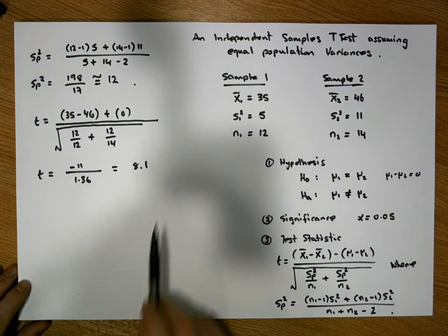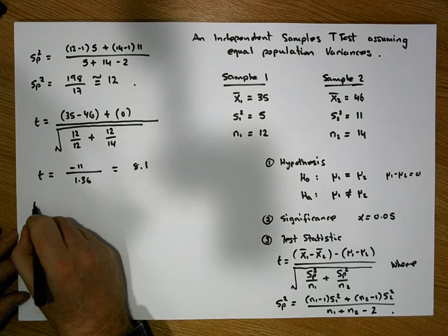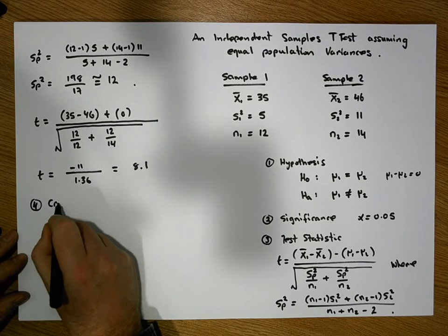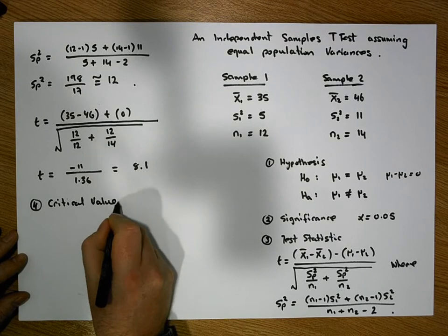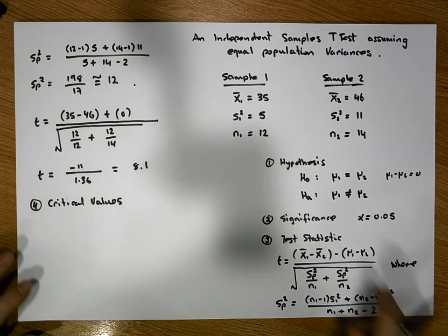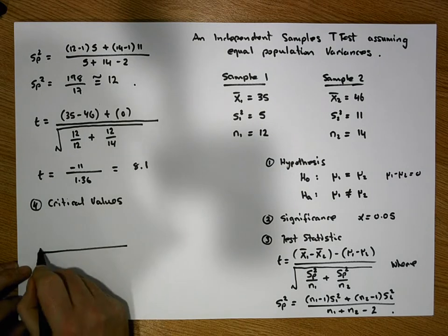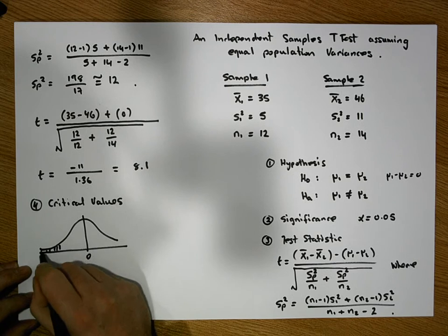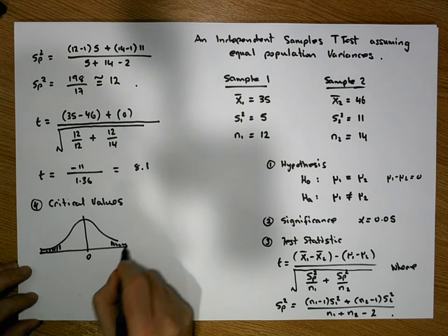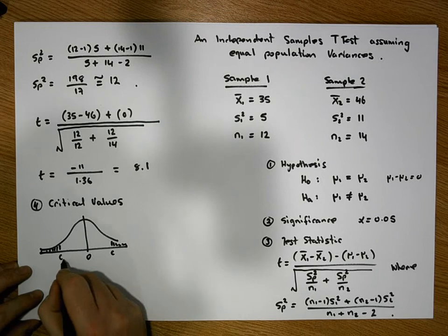So what we need to do in step four is to identify our critical values, the critical values in this particular case, our critical regions. This is a t-test, so it's a t-distribution. The t-distribution is hypothesized to be centered on zero. It's a two-tailed test, so we have two tails. We have two critical values, c1 and c2.